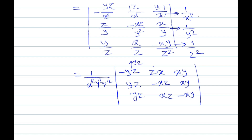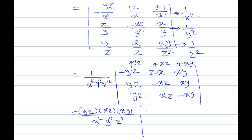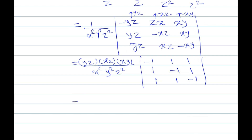From the second column take xz common and from the third column take xy common. After all cancellations — x·x, x² cancel; z·z, z² cancel; y·y, y² cancel — what remains in the determinant is a 3×3 matrix with entries −1, 1, 1 in the first row; 1, −1, 1 in the second row; and 1, 1, −1 in the third row, with an overall factor of 1.